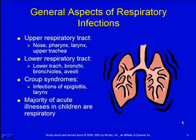We'll look at some general aspects of respiratory illnesses depending on where they are in the respiratory tract. We'll first look at upper respiratory tract illnesses, which is the nose, pharynx, larynx, and upper portion of the trachea. Then we'll look at lower respiratory tract infections, which is the lower trachea, bronchi, bronchioles, and alveoli. We'll also separate out croup syndromes and look at those separately.